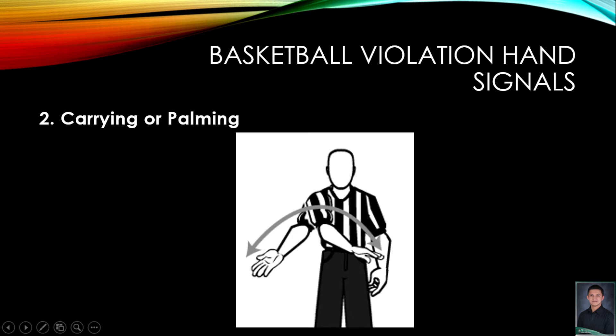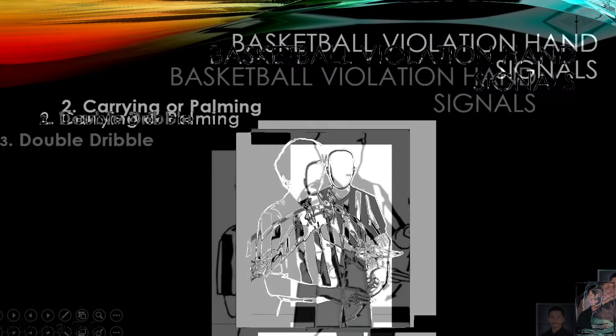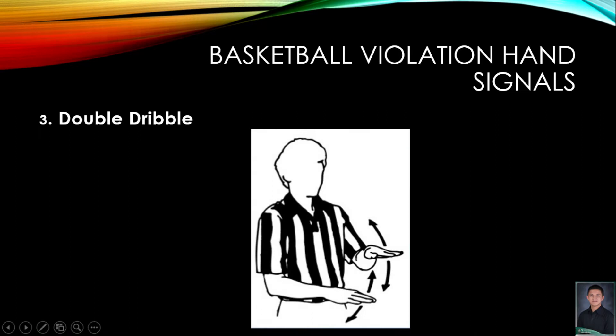Number two is carrying or palming the ball. In order to signal a palming or carrying violation, the referee will have one hand at the side, flip over from palm up to palm down. Number three is double dribble. The official will signal a double dribble violation by putting both of his hands in front of him with palms down and alternating them up and down